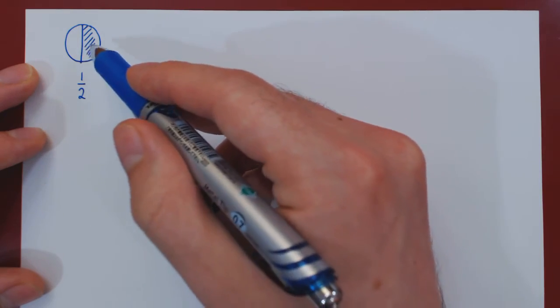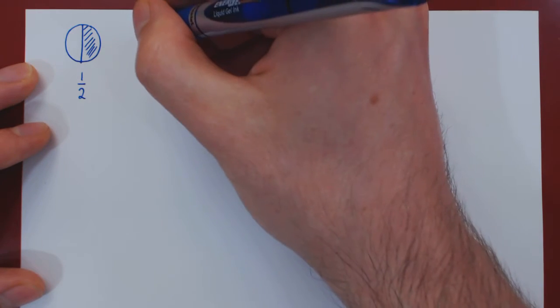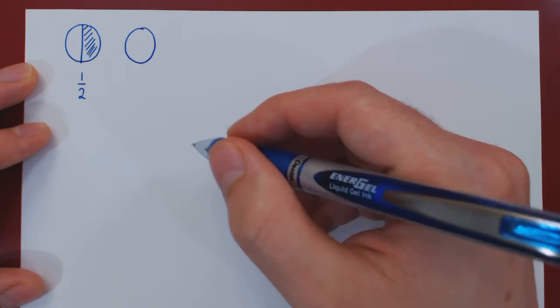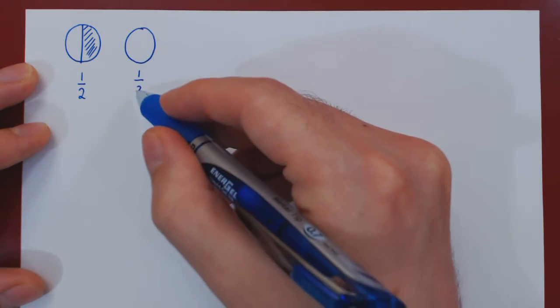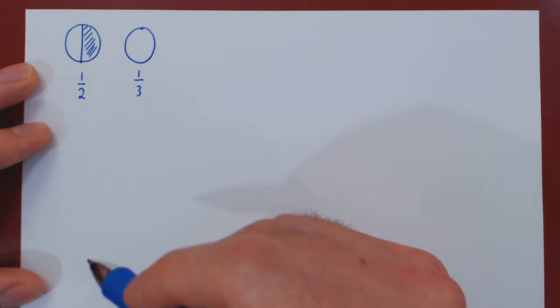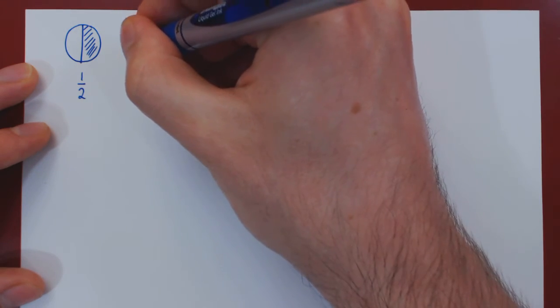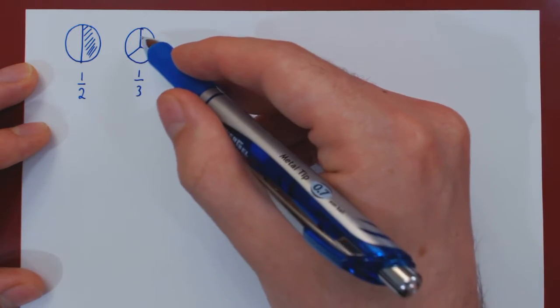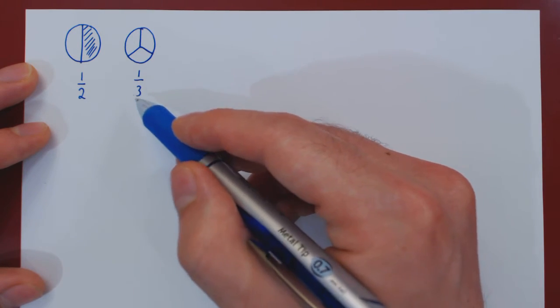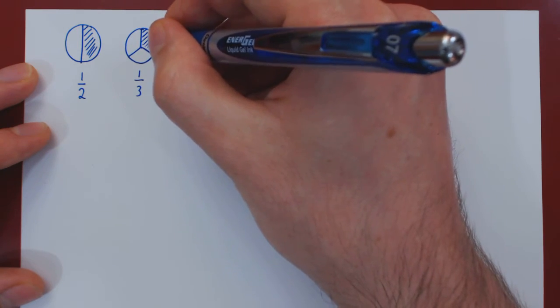The two parts are of equal size. What if we consider one over three? You must divide the whole circle into three parts of equal size. Imagine that these three parts are of equal size, and we take one part out of the three parts. So the shaded region would be one third.